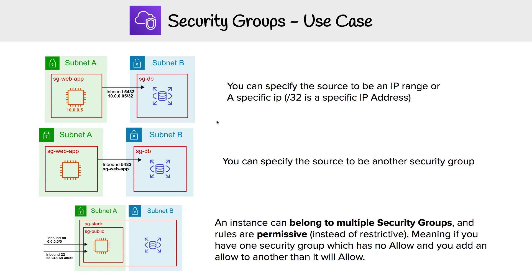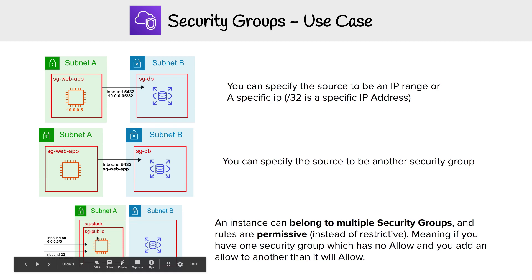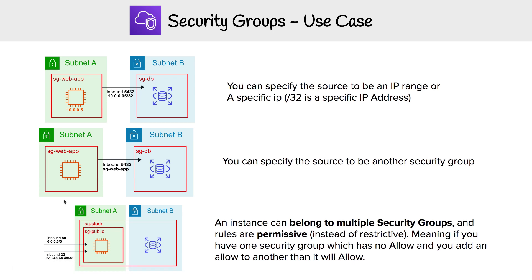In our last use case, we have inbound traffic on port 80 and inbound traffic on port 22 for the SG public group. Then we have the EC2 instance and the RDS database within its own security group. The EC2 instance is allowed to talk to that RDS database, and the RDS database isn't exposed publicly because it's in a private subnet — it doesn't have a public IP address. But the EC2 instance is able to get traffic from the internet and also accept SSH access on port 22.